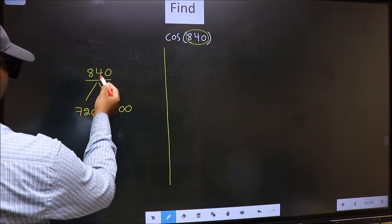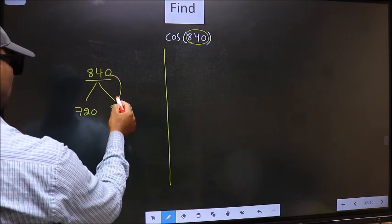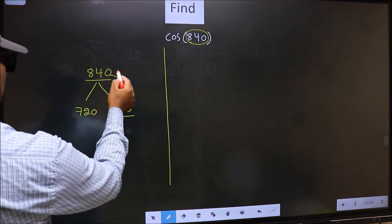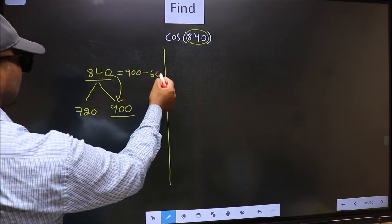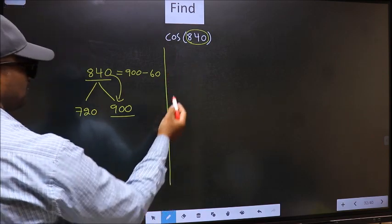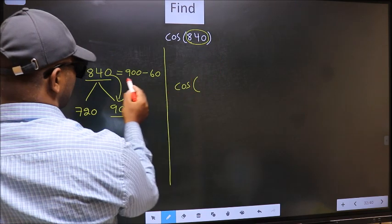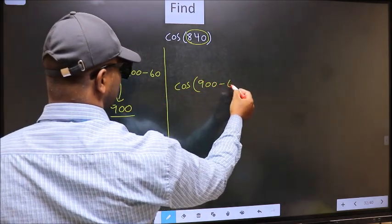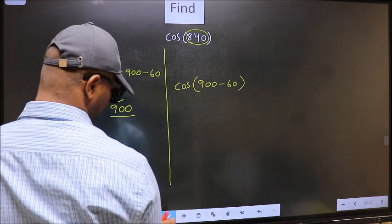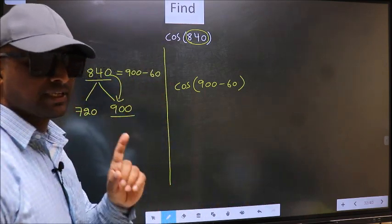Next, 840 is close to which number? This is close to 900. So in place of 840, we should write 900 minus 60. This will become cos of 900 minus 60. This is your step 1.